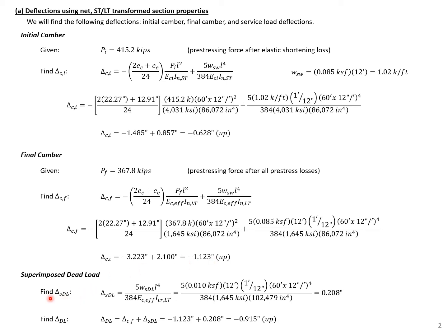We can also find the deflection from our superimposed dead load. This is a sustained external load, so we use our long-term transform section properties and our effective modulus of elasticity. Plugging those values into our deflection equation with the distributed superimposed dead load, we get a downward deflection of 0.208 inches. Adding that to our final camber gives us the total deflection from pre-stressing, self-weight, and superimposed dead load — negative 0.915 inches, which is an upward deflection.